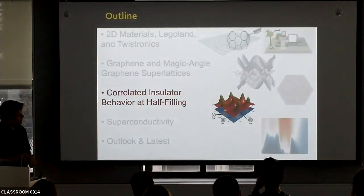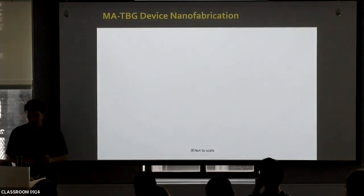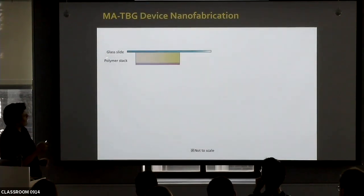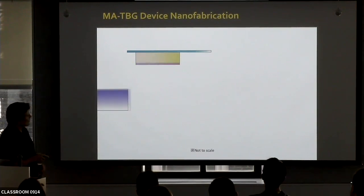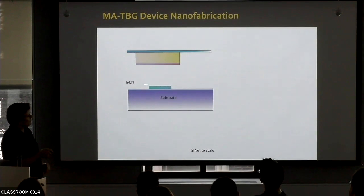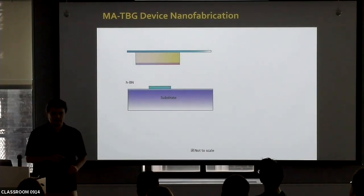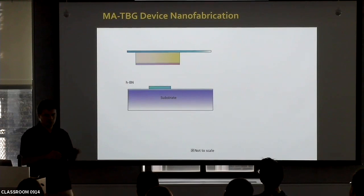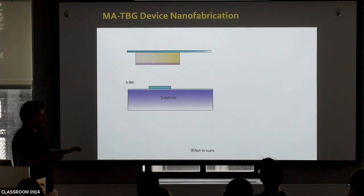Let me tell you a little bit about our data, but before I show you data, let me show you how we fabricate these devices. We start with a glass slide with a transparent polymer on it. We bring a substrate which has hexagonal boron nitride — a layered insulator which is a very nice substrate for graphene devices. We pick up this hexagonal boron nitride with the sticky polymer. Then we bring another substrate with a monolayer sheet of graphene on it.